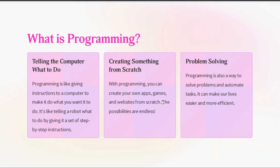Problem solving: programming is also a way to solve problems and automate tasks. It teaches kids how to break down complex problems into smaller parts and think logically about how to solve them. Some easy examples include writing a program to calculate the sum of numbers from 1 to 100, creating a program to convert Fahrenheit to Celsius or vice versa, and automating a task like renaming a bunch of files or organizing folders based on criteria.